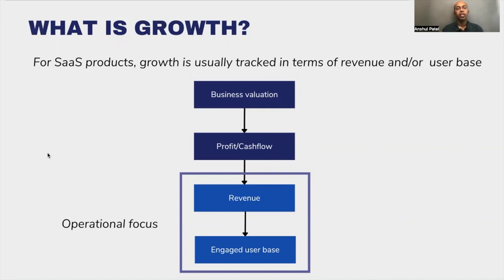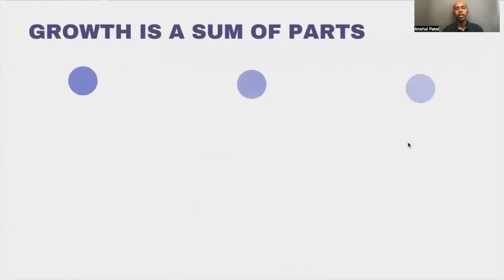So we take the drivers of that, which is usually profit and cash flow, based on which companies get valued. In companies where profit or cash flow does not exist, investors look at other indicators which indicate future probability of profit or cash flow. Businesses usually look at engaged user base size and revenue to drive growth operationally, and that's mostly what product teams, marketing teams, and sales teams get together to go after.